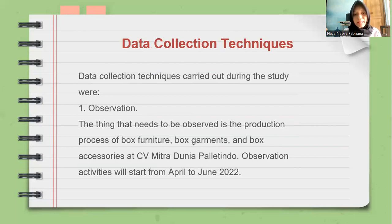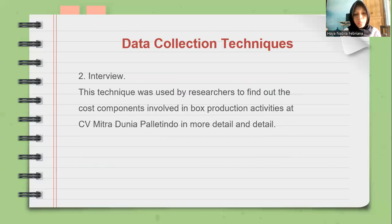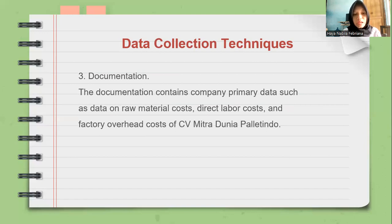Data collection techniques carried out during the study are as follows. The first is observation of the production process of box furniture, box garments, and box accessories at CV Mitra Dunia Palitindo; observation activities will start from April to June 2022. The second is the interview, used to find out the cost components involved in box production activities in more detail. The third is documentation, containing company primary data such as raw material costs, direct labor costs, and factory overhead costs.